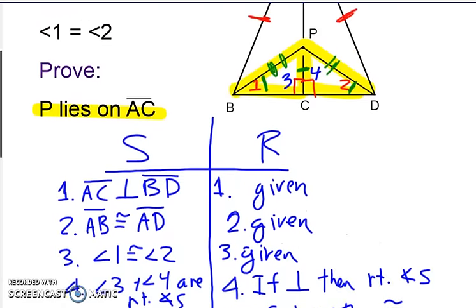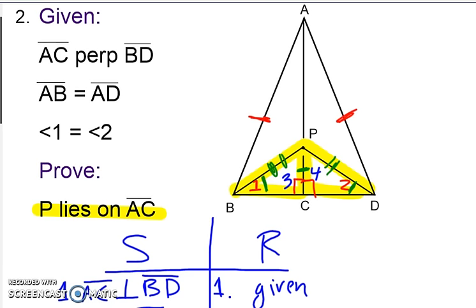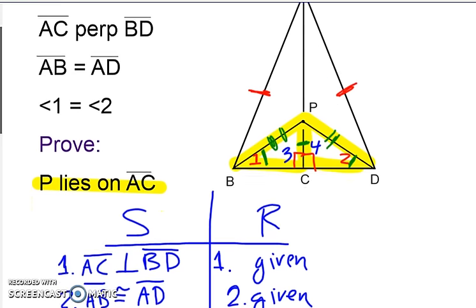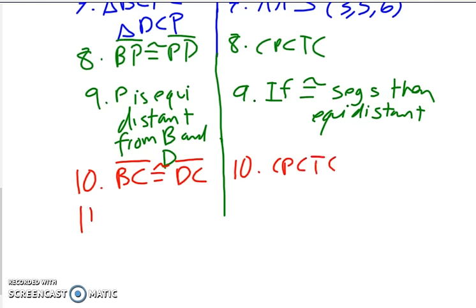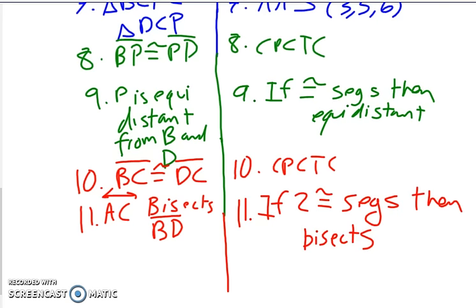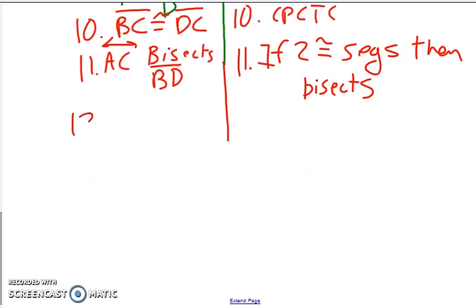Now here's where you need to be careful. We've shown that P is equidistant from B and D, but we haven't yet shown that AC is a perpendicular bisector. To show that AC is a perpendicular bisector, we need to show that it's a bisector and that it's perpendicular. We already have the perpendicular part — we need the bisector part. To do that, we use CPCTC again to say BC must be congruent to DC by CPCTC. Therefore AC bisects BD — reason: if two congruent segments, then it bisects. So now we have that AC bisects BD, and we were given that it's perpendicular, so putting those together, AC is the perpendicular bisector of BD.